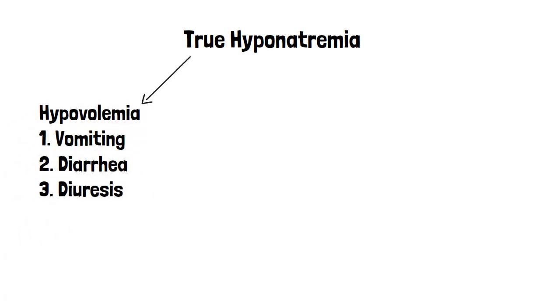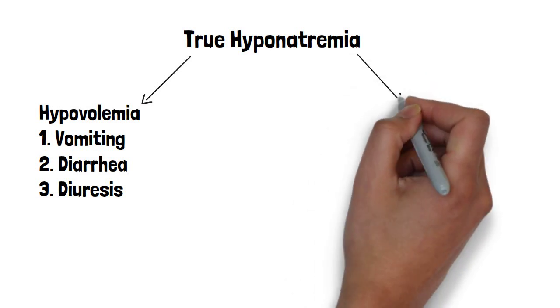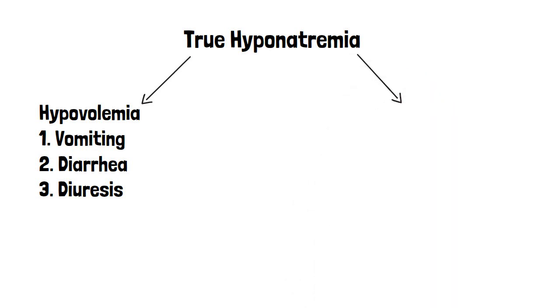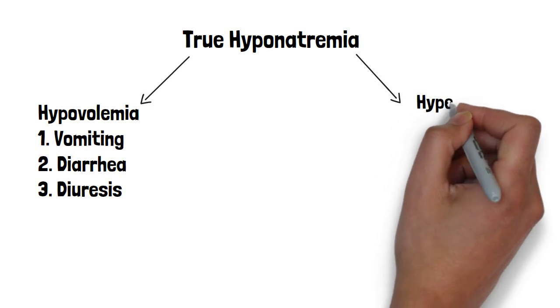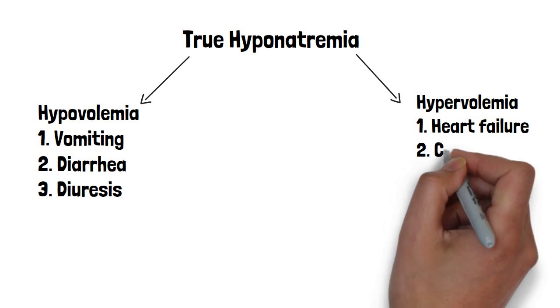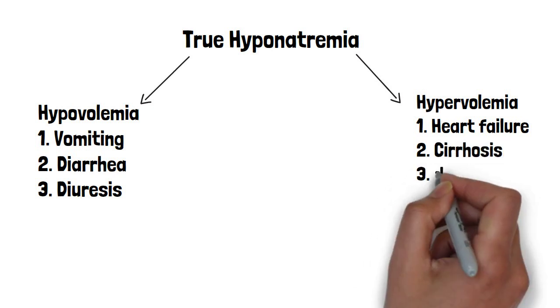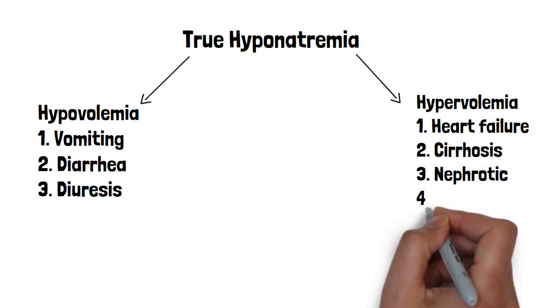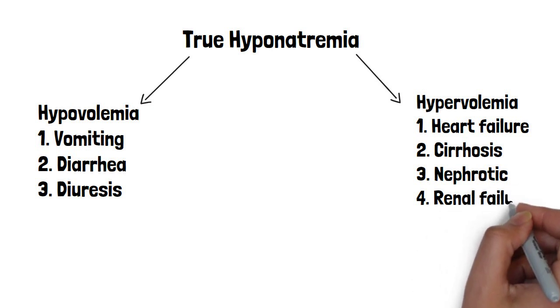With hypo, we know it's simple. Vomiting, diarrhea, diuresis are the normal reasons for this. And when it comes to hypervolemia, we're accustomed to the conditions that make someone volume up, so to speak. It's usually heart failure, people who have cirrhosis, people who have nephrotic syndrome, and those who have renal failure, whether it's from ESRD or bad AKI.